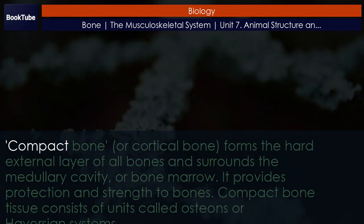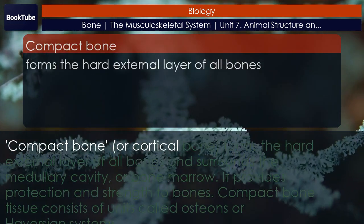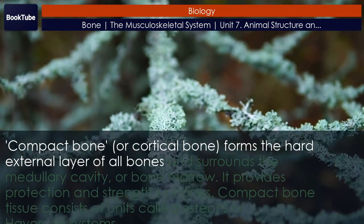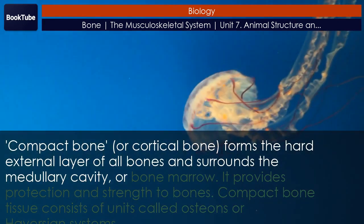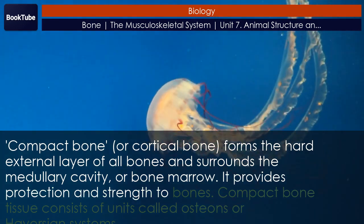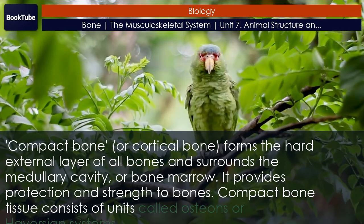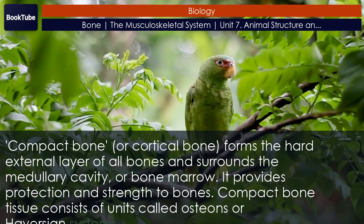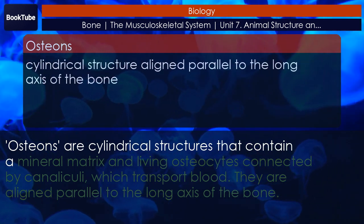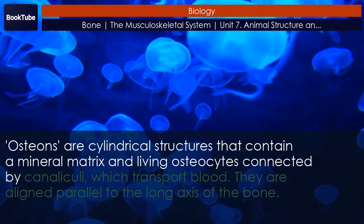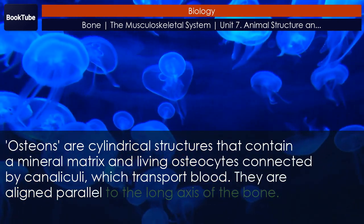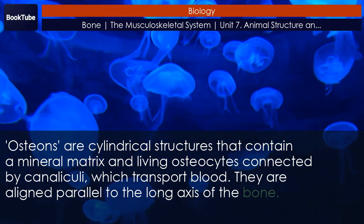Compact bone, or cortical bone, forms the hard external layer of all bones and surrounds the medullary cavity, or bone marrow. It provides protection and strength to bones. Compact bone tissue consists of units called osteons or Haversian systems. Osteons are cylindrical structures that contain a mineral matrix and living osteocytes connected by canaliculi, which transport blood. They are aligned parallel to the long axis of the bone.